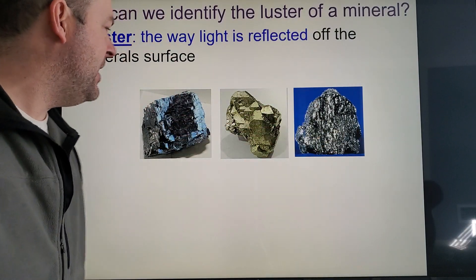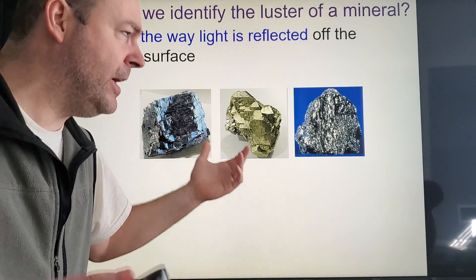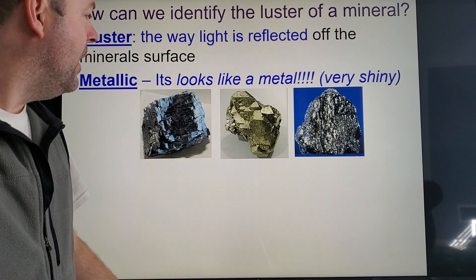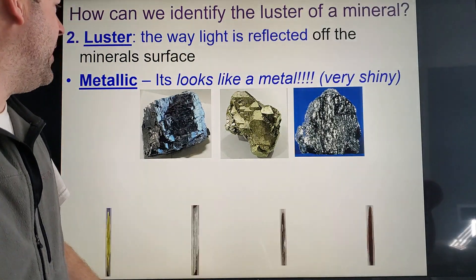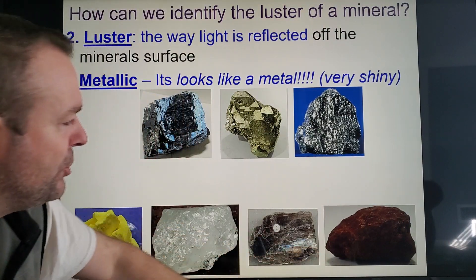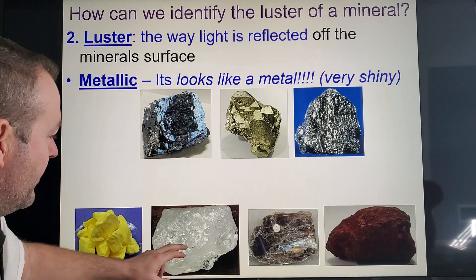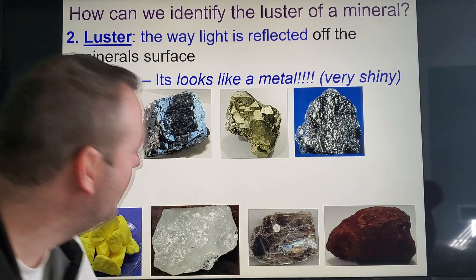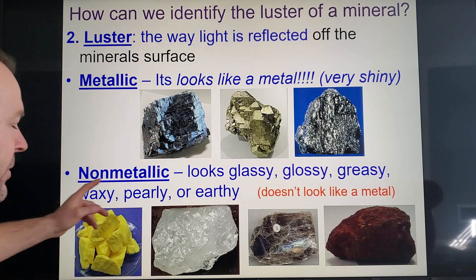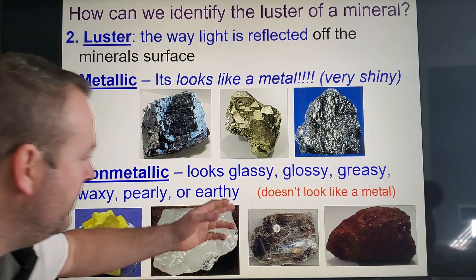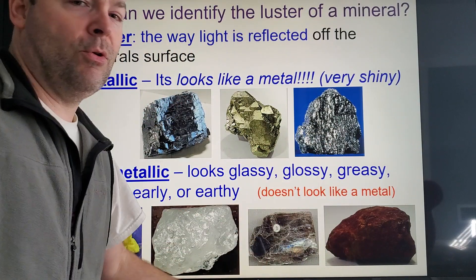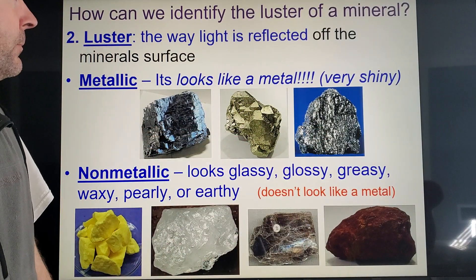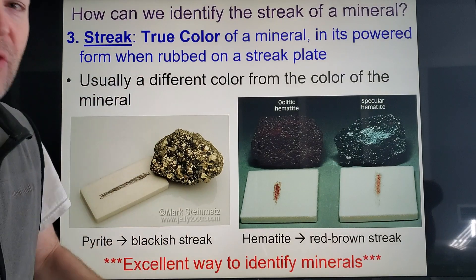These minerals all reflect light — it looks like aluminum foil reflection — that's called a metallic luster. It's very shiny and is due to how the atoms are arranged. Then there are non-metallic lusters, which can still be a little shiny: glassy, glossy, greasy, waxy, pearly, or earthy. Either way, they don't reflect like aluminum foil.